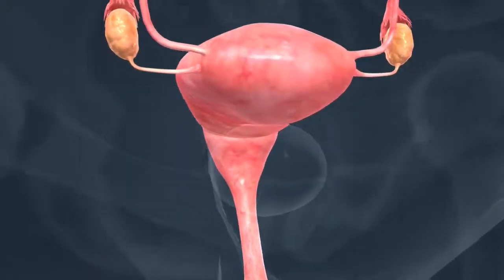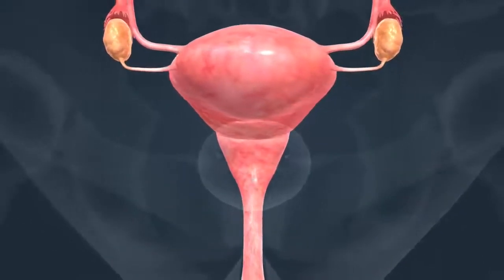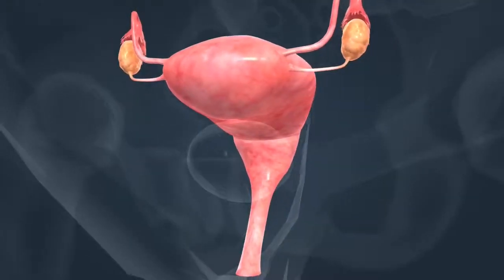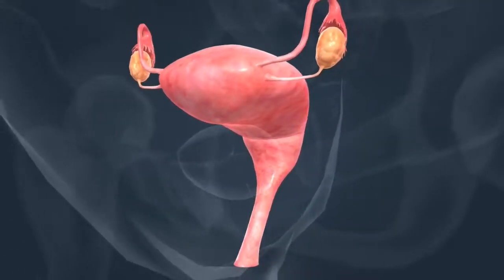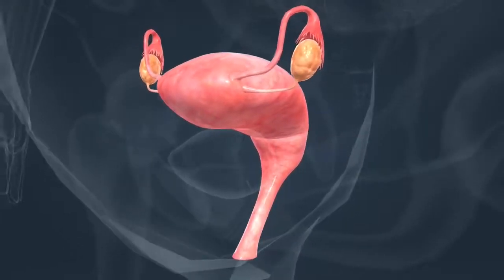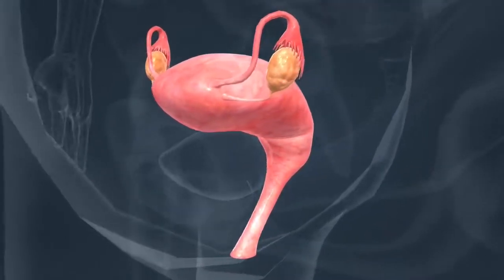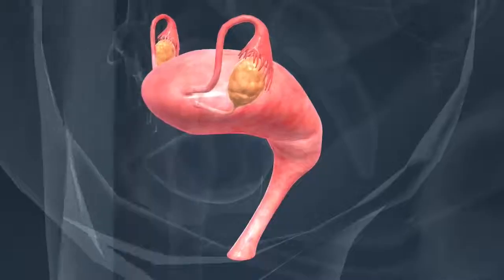The reproductive glands in females are the ovaries, which contain immature eggs, or ova. In each menstrual cycle, one of the eggs matures and is released from the ovary into the fallopian tubes. Fertilization takes place here.